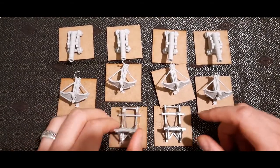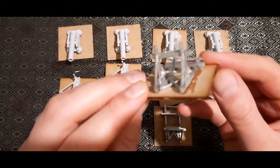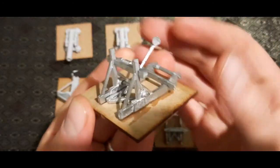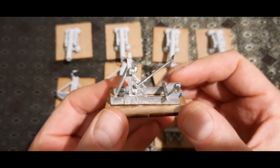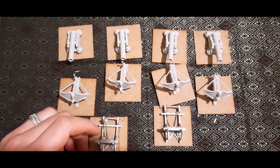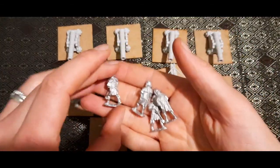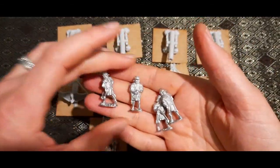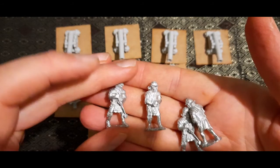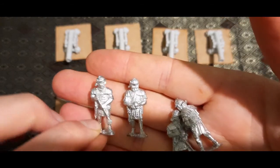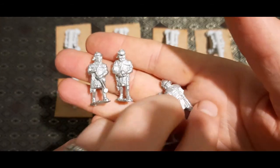I got these from Black Tree Designs, I'll put a link in the description below where you can get your own. They're very nice little models, I'm very impressed with them. They do come with the Roman crew as well, you get two per onager, a loader and a wincher—not a technical term but I'm calling them that now. I want to hang on to these because I don't collect Romans.